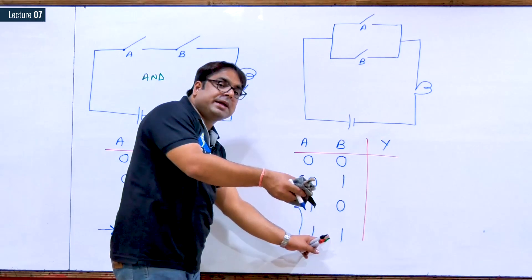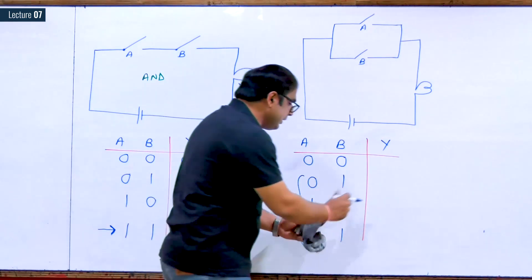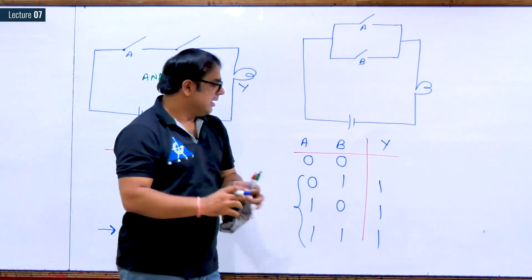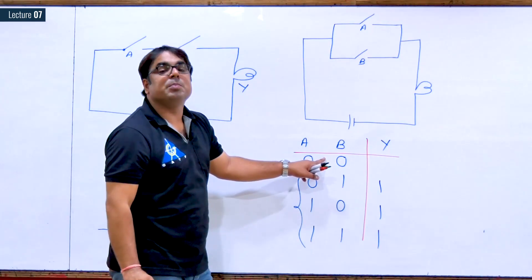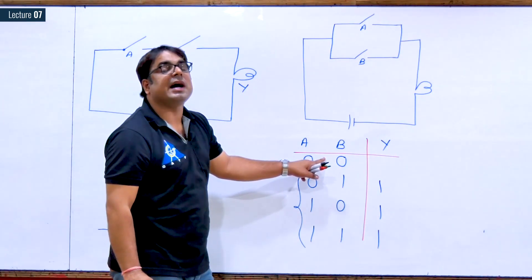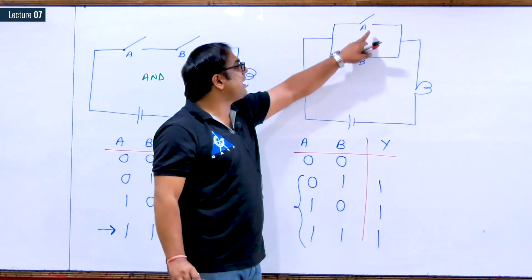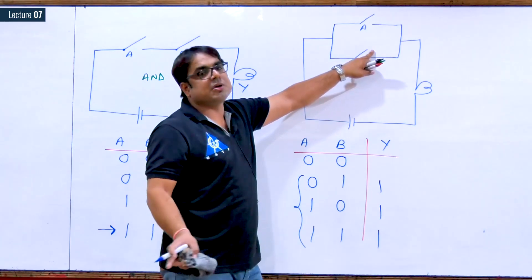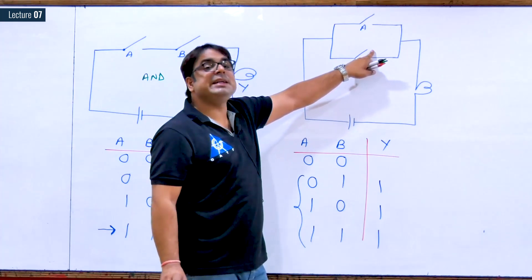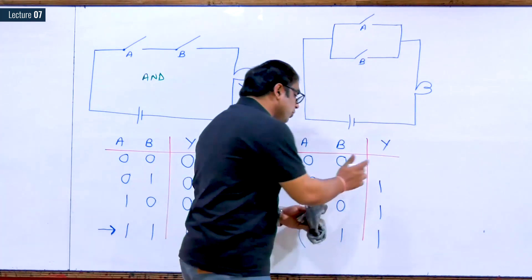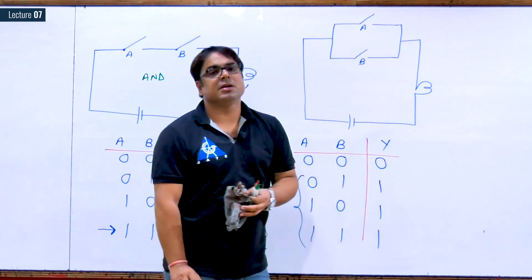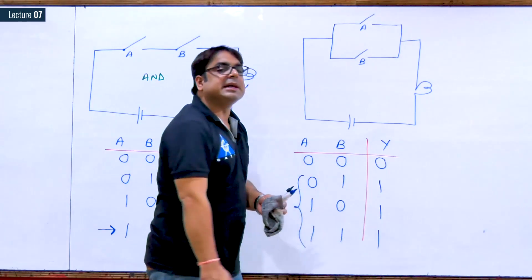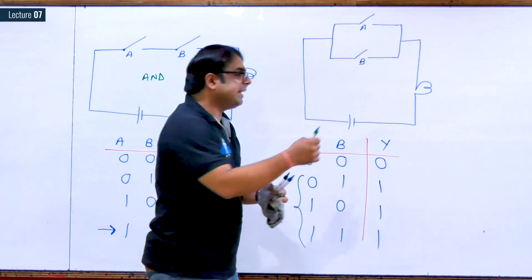In the last three conditions — either one switch is on or both are on — the loop is complete, current flows, and the bulb glows, represented by logic high. In the first condition, both switches are open, so no closed path exists, no current flows, and the bulb does not glow. This represents an OR gate — this is the switching circuit representation for the OR gate.